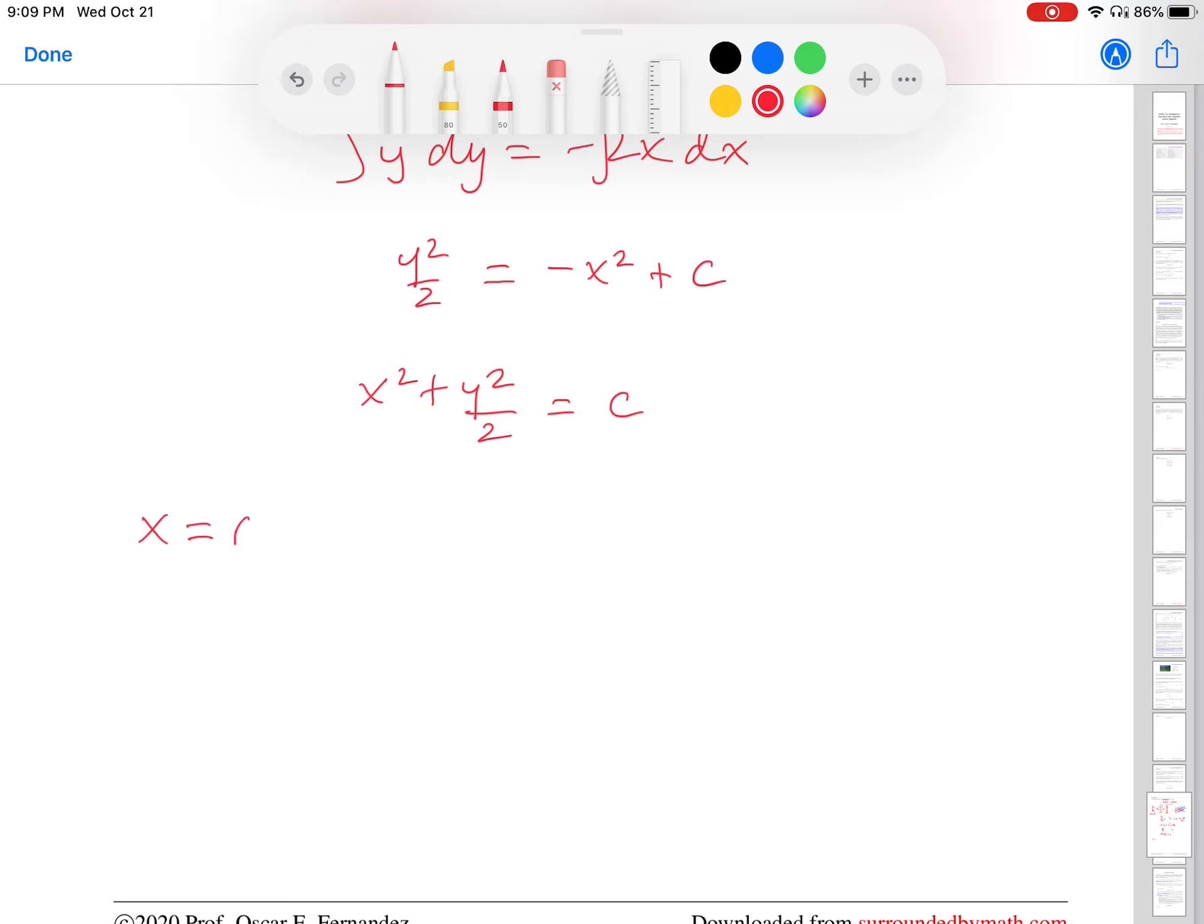I can just look at what happens, for example, if x is 0, then y squared over 2 is that constant c, which implies that y would be plus or minus the square root of 2 times c. On the other hand, if y equals 0, then I just get x squared equals c. So x equals plus or minus square root of c. And sorry, I should have said square root in both of these, square root of c.